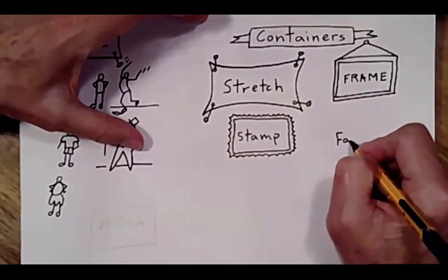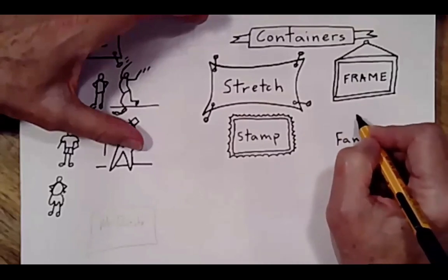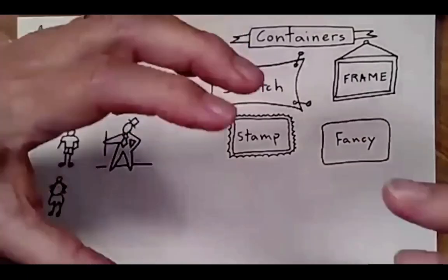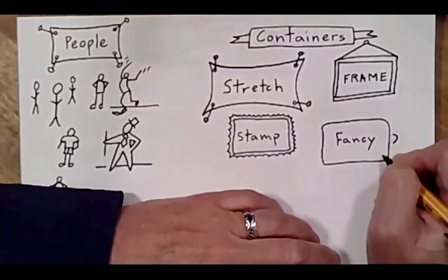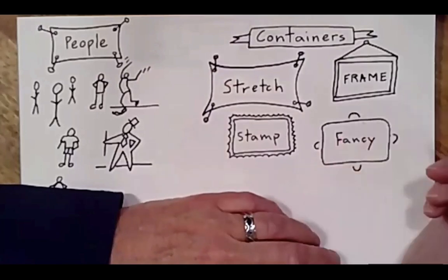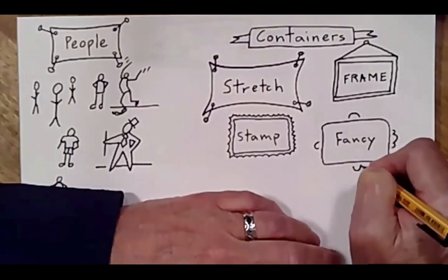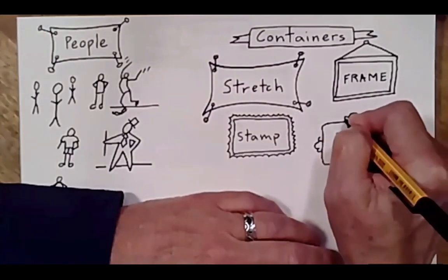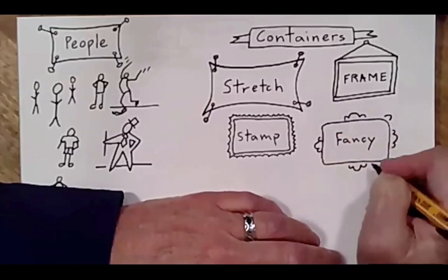We're going to do a fancy one. So these I just make believe I'm doing it in an ornate frame. I'm going to do a larger half circle in the middle of each edge. I'm going to do a small half circle next to each of them.